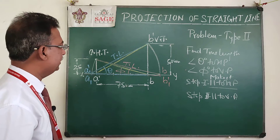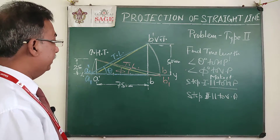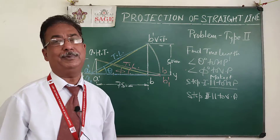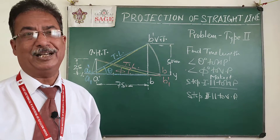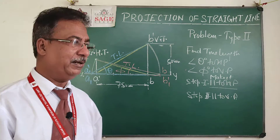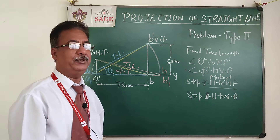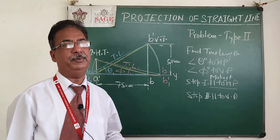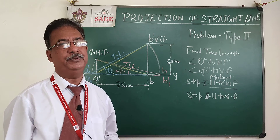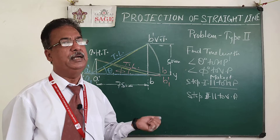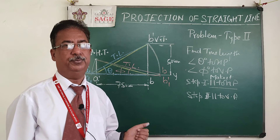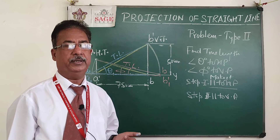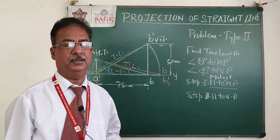This is a very interesting problem — the different thing here is that the line lies in the second quadrant. But as you saw while solving, we didn't need to think about the quadrant; we just plotted the given information and got the result. Hope you understand this problem. Do it in your sketchbook. Thank you.